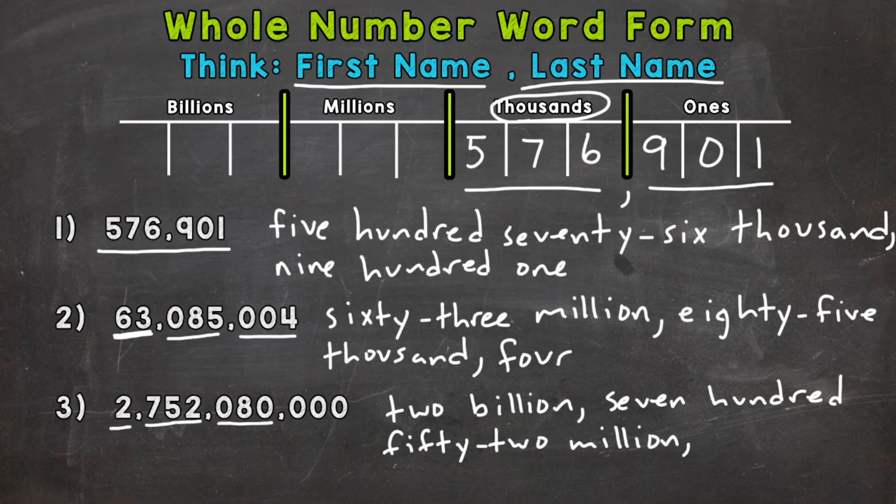Read this number as is. We have 80, and it's sitting in the thousands period, so eighty thousand. And we end with all zeros in the ones period. So we're done with the word form as we have it written out now. So two billion, seven hundred fifty-two million, eighty thousand.